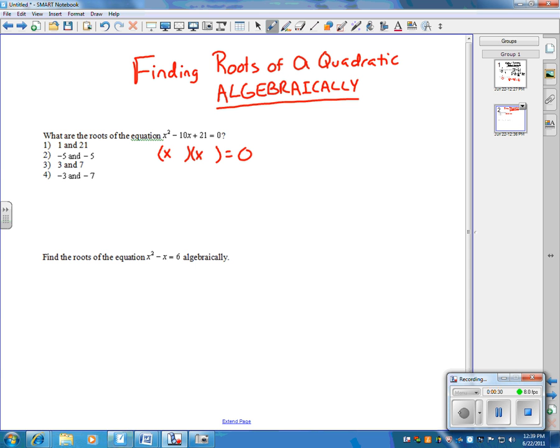I need a pair of numbers that's going to add to give us negative 10 and multiply to give us 21. For 21, I got 7 and 3, and 1 and 21. I know that I'm not going to be able to get a 10 with 1 and 21, so 7 and 3 are probably going to be the numbers I'm going to choose. To get a negative 10 with 7 and 3, I know I'm going to have to have both of these negative.